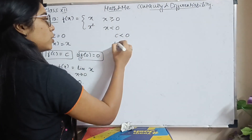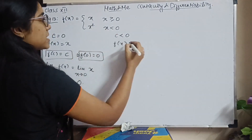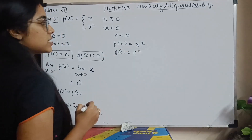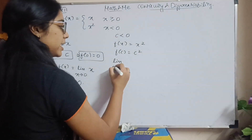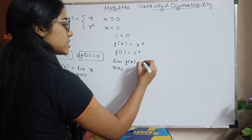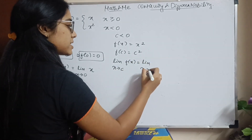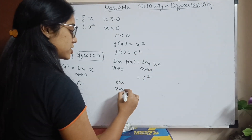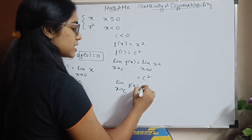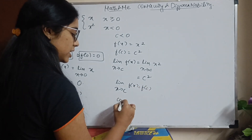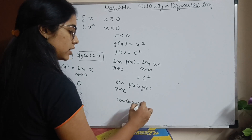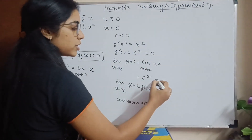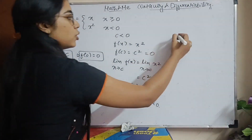For c less than 0, the one and only condition is f of x equals x squared. So f of c is c squared. The limit x tends to c of f of x is limit x tends to c of x squared. Substituting c, I get c squared. So limit x tends to c of f of x equals f of c — the function is continuous for c less than 0. When c equals 0 is substituted, I will have 0 here and 0 here, and they are equal.